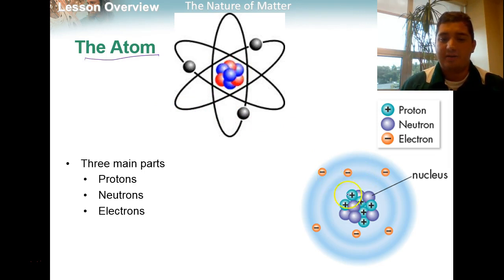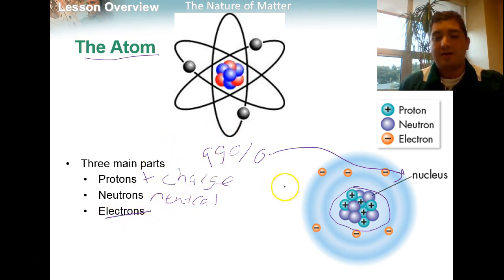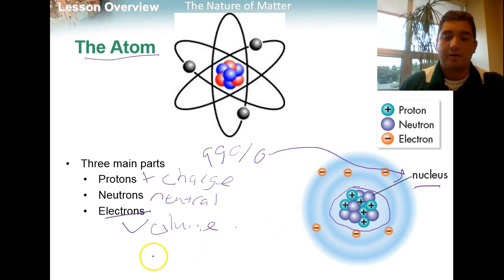So in an atom, we have two of these three parts that make up the nucleus. And these are the protons and the neutrons. The protons have a positive charge, and the neutrons are neutral. Now they make up the nucleus, which contains the majority of the mass, about 99% of the mass is found in the nucleus.